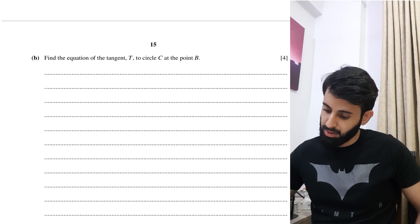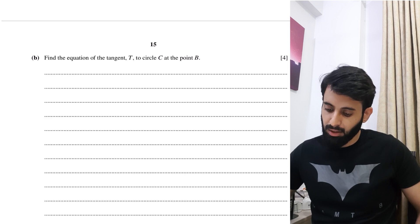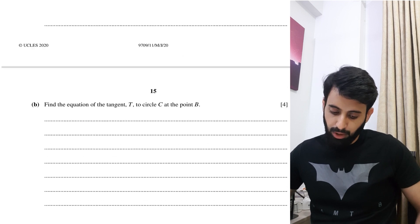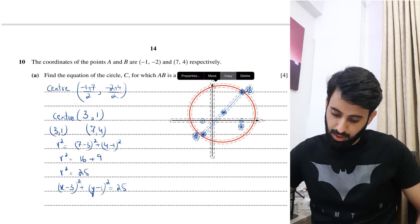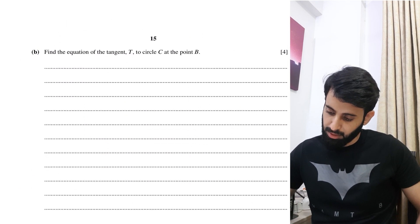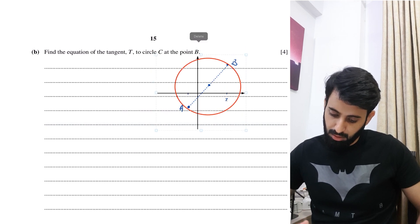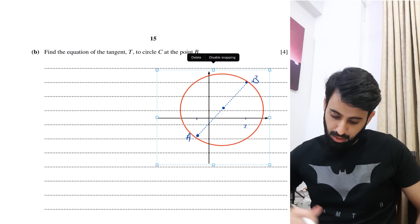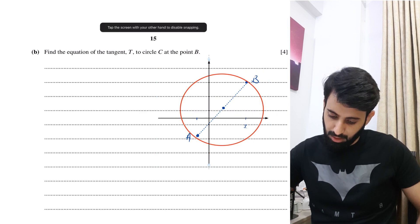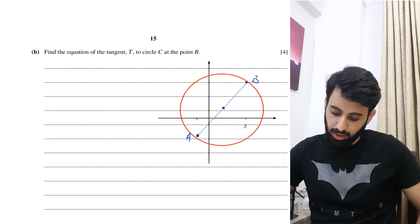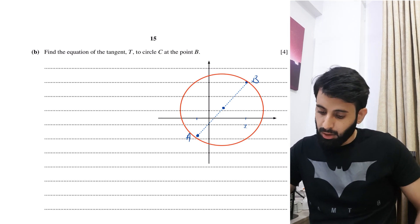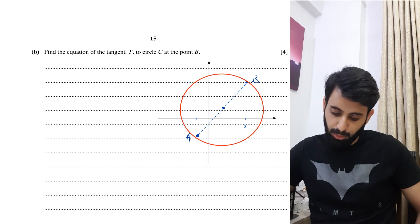Now let's do Part B. It says: find the equation of the tangent T to circle C at the point B. I'll copy the diagram and extend the axes slightly. We have to find the equation of this tangent line, which touches the circle at point B, coordinates 7, 4.